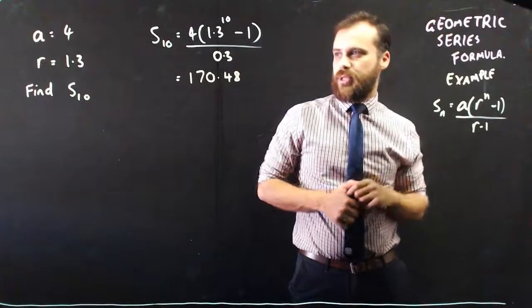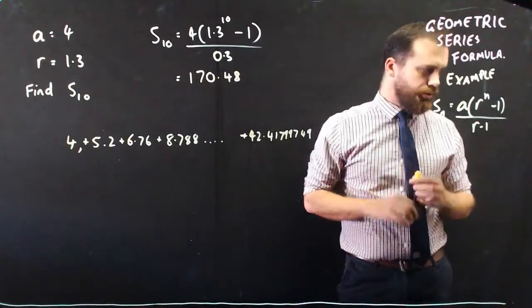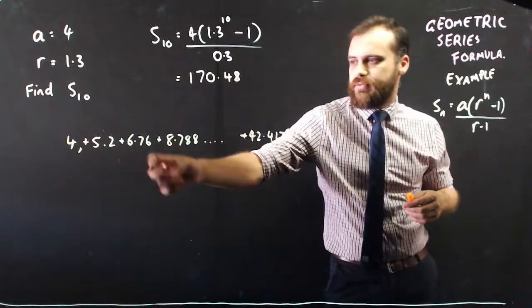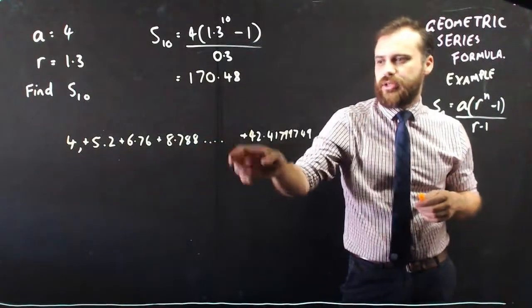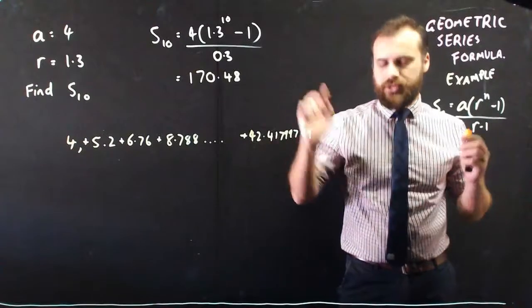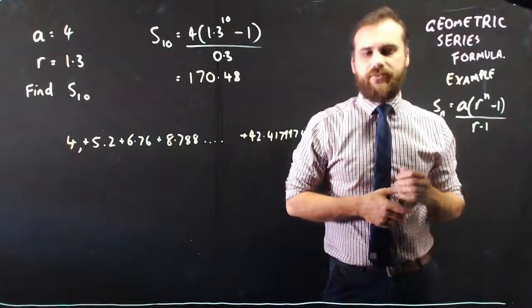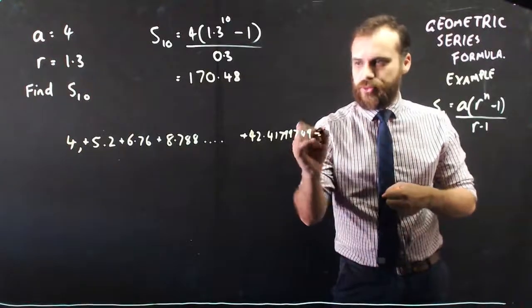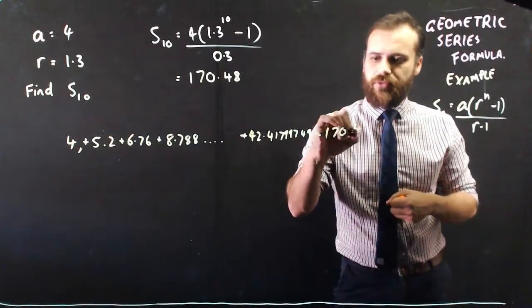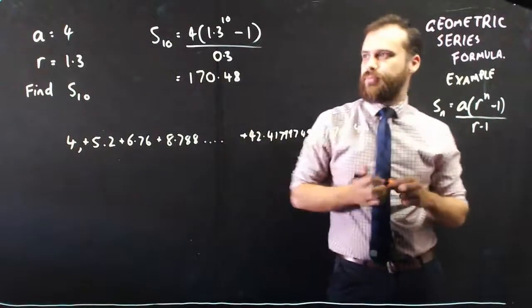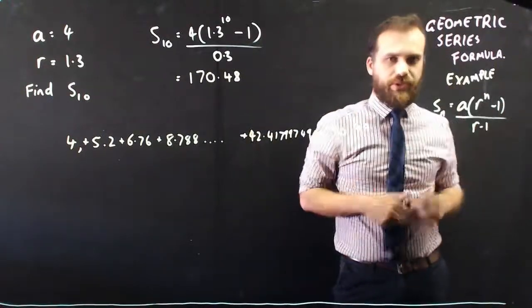All right, that's the geometric series formula. Very, very straightforward. Just to be really clear, that's what it's doing. 4 plus 5.2 plus 6.76 plus 8.7888 dot dot dot plus the 10th term, which is 42.41799749 equals 170.48 approximately. Okay, that's what it's doing. Geometric series formula.